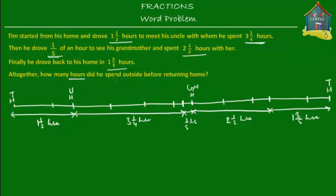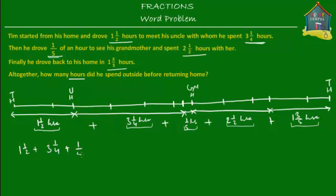Altogether, how many hours did he spend outside before returning home? Well, altogether he spent one and a half hours, plus three and a quarter hours, plus a fifth of an hour, plus two and a half hours, plus one and three-fifth hours. That's how much time he spent outside before returning home — all we have to do is add up all these numbers. So let's add: one and a half, plus three and a quarter, plus one-fifth, plus two and a half, plus one and three-fifth hours.